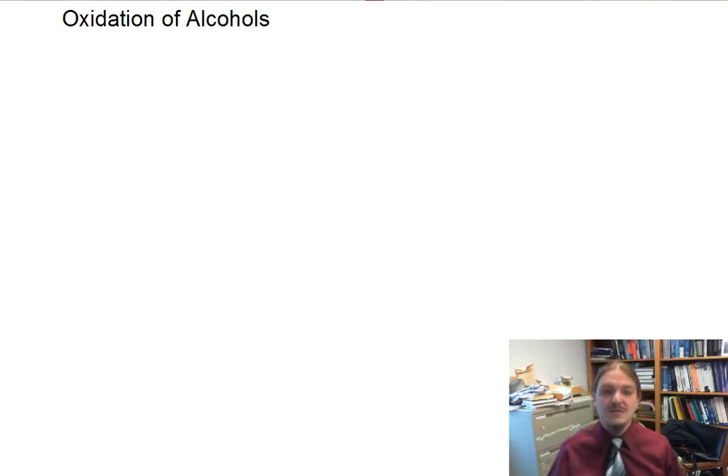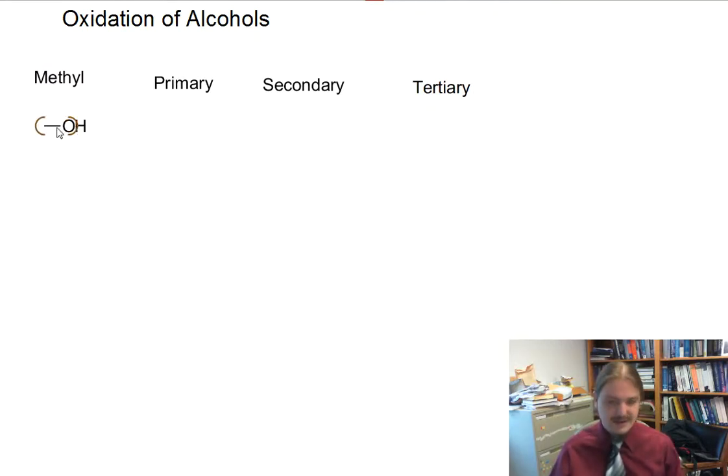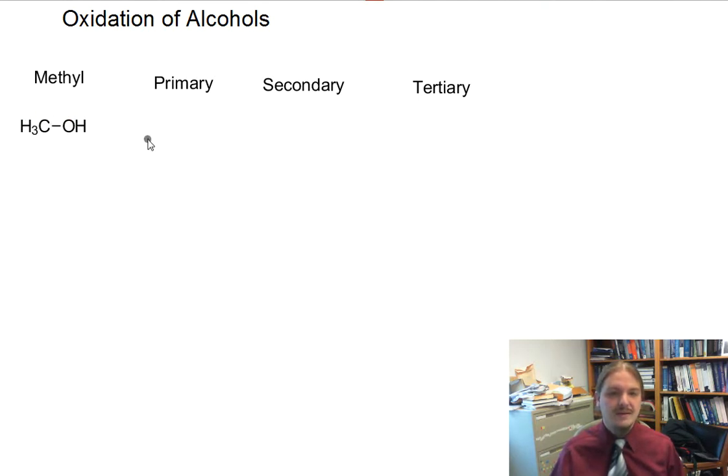So first, I want to take this moment to remind you maybe of the different sort of classifications of alcohols based on the substitution at the alcohol carbon: methyl, primary, secondary, and tertiary. I have to make methyl its own carbon, because it's not technically a primary alcohol, as primary alcohol has one additional carbon-carbon bond at the alcohol carbon.